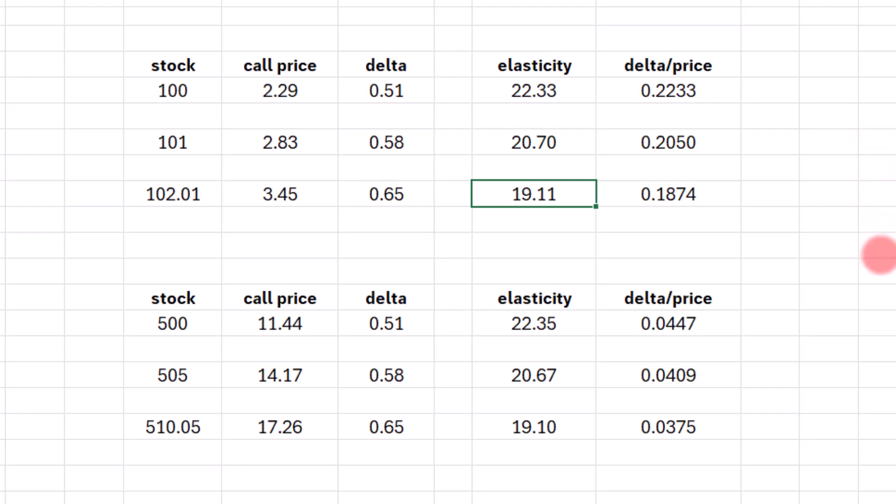But watch what happens if we go to a stock price of 500. So now I've got a stock price of 500. I increase it by 1% to 505. Increase it by 1% to 510.05. Pricing model says the call prices are 11.44, 14.17, and 17.26.